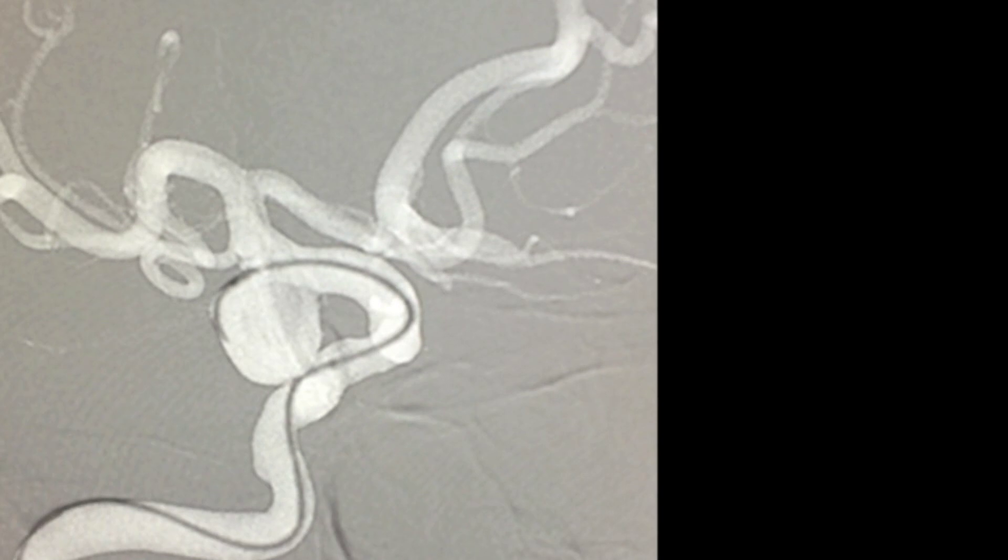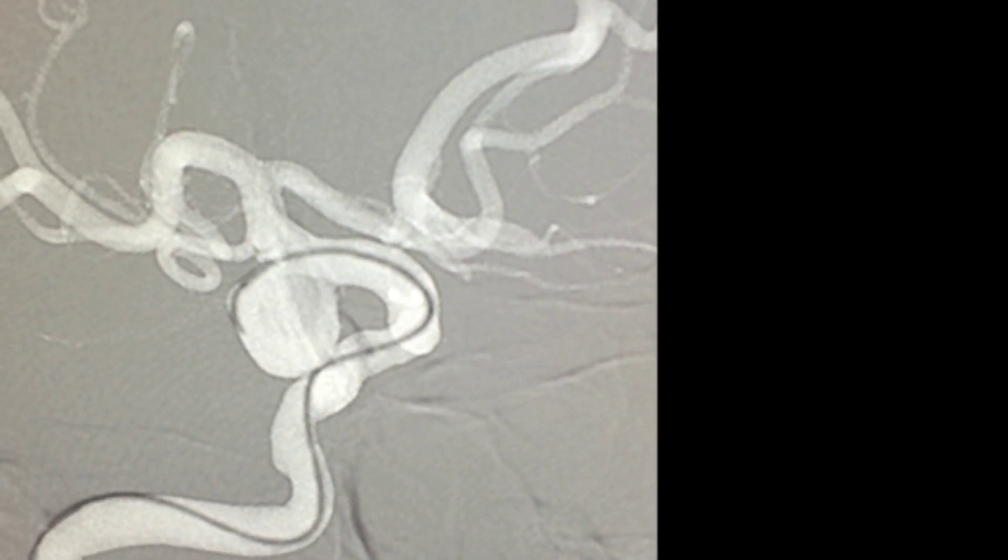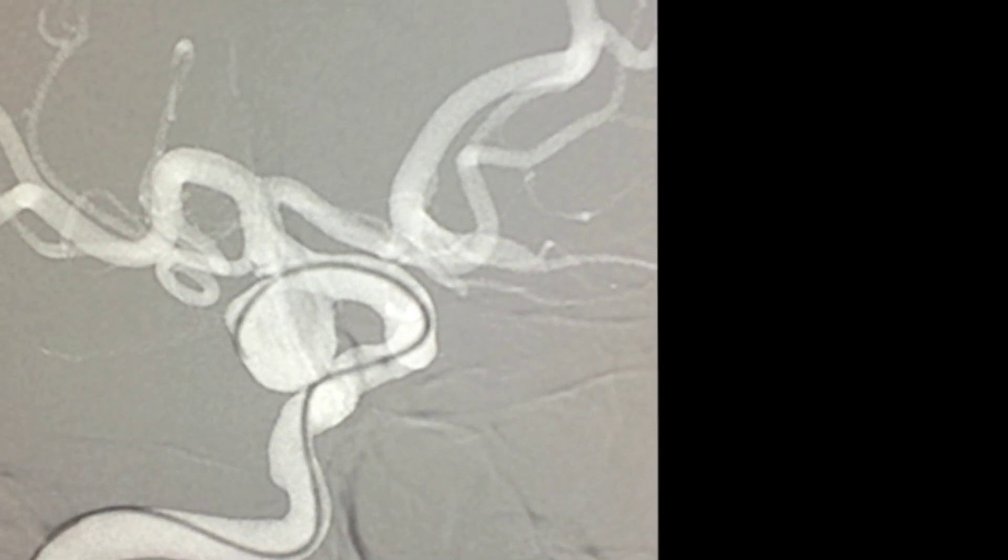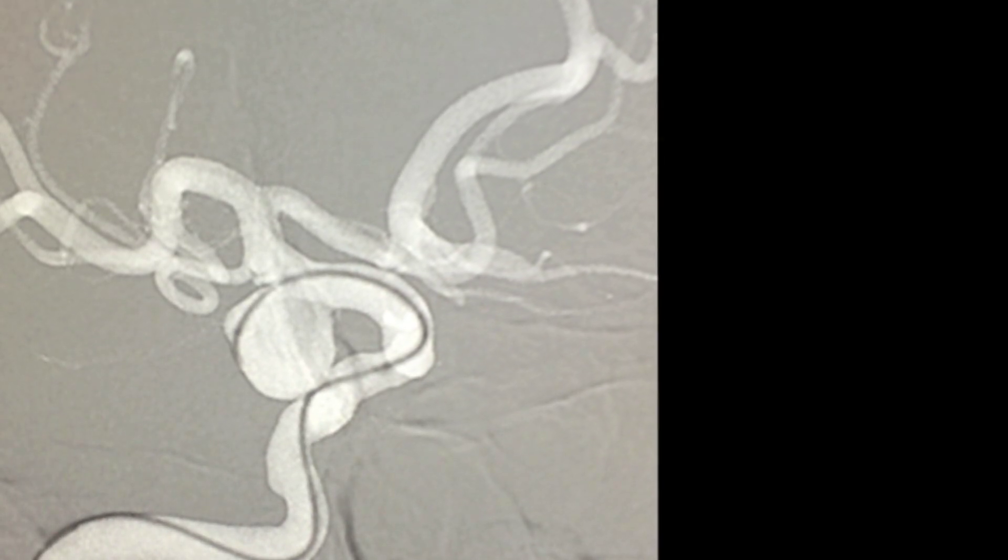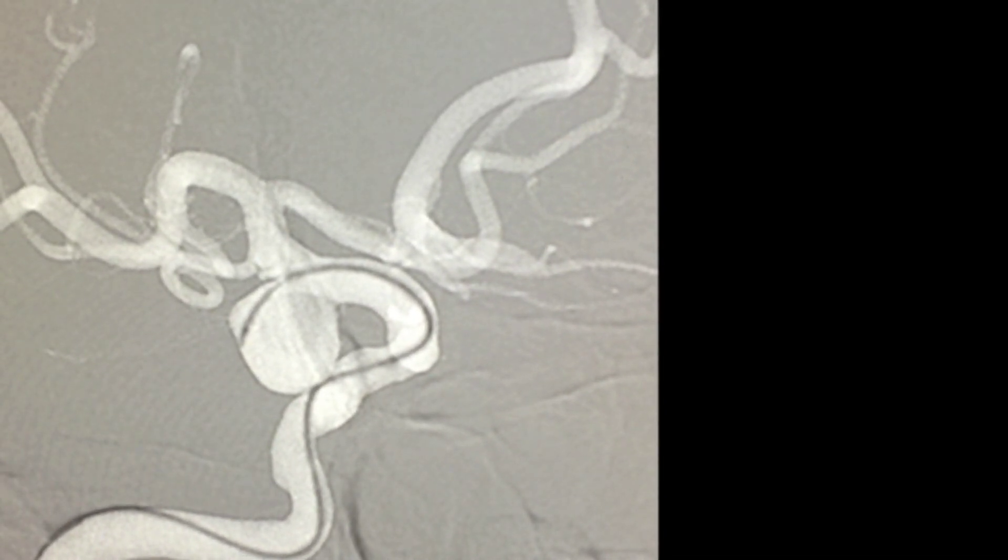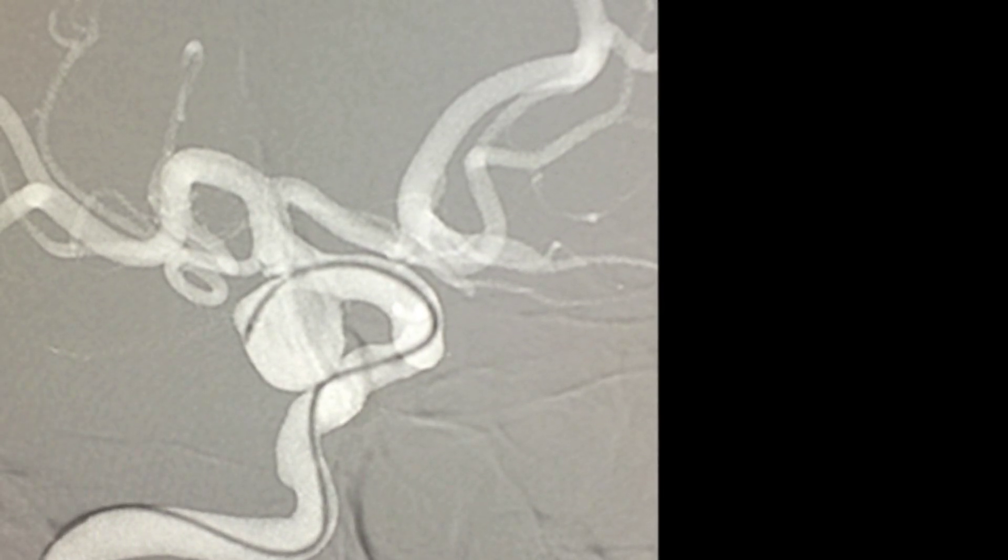Here you can see the aneurysm being catheterized under a road map technique where a micro catheter is advanced over a micro wire. Once the aneurysm is catheterized the micro wire is removed and replaced with a framing coil.